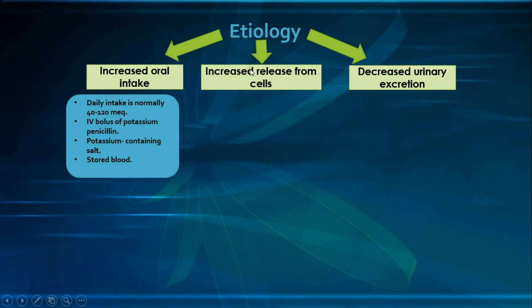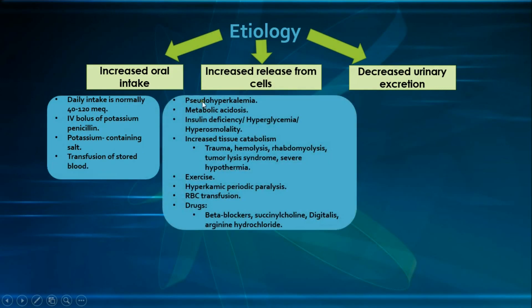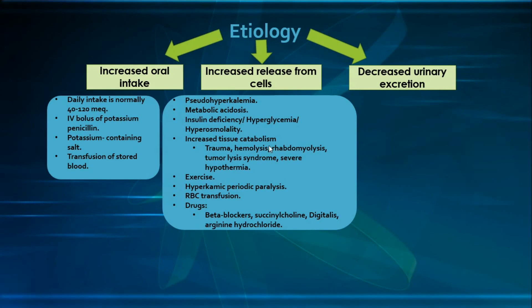Coming to the increased release of potassium from the cells, starting with pseudo-hyperkalemia, which is not a true hyperkalemia but rather hyperkalemia due to a flaw in the collection or storage period. It is usually due to mechanical trauma during venipuncture causing hemolysis of the RBCs, or due to repeated fist clenching causing release of potassium from skeletal muscle cells.